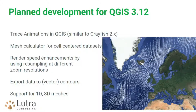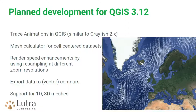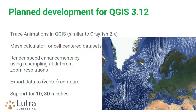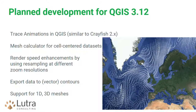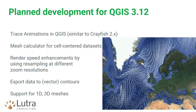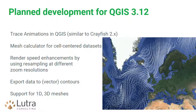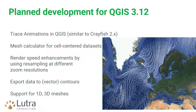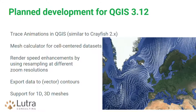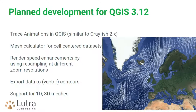Let me talk about confirmed upcoming development. We want to implement trace animation — you'll be able to select a box on the canvas and the canvas will refresh accordingly. We want to extend the mesh calculator for cell-center datasets. There's a project to highly improve mesh rendering speed using a technique similar to raster overviews or pyramids: the number of triangles in the generated mesh will depend on your zoom level, making it much faster than it is now. There are small enhancements like exporting data to contours, and a big one: support for 1D and 3D layered meshes as described earlier.